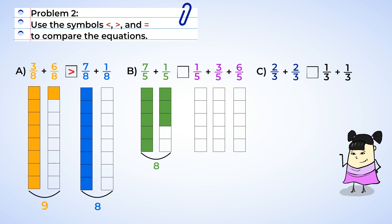Now let's add the next expression: one-fifth plus three-fifths plus six-fifths. If we just look at the numerators, one plus three is four, plus six is ten. Eight-fifths is less than two wholes, or ten-fifths. So seven-fifths plus one-fifth is less than one-fifth plus three-fifths plus six-fifths.